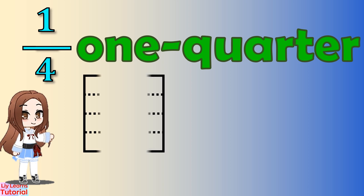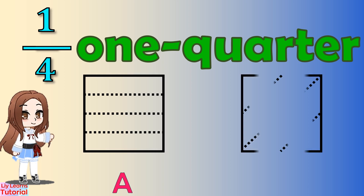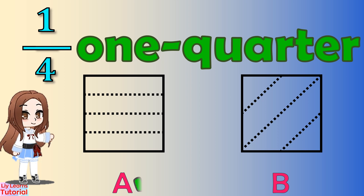Which of these shapes has been cut exactly in quarters? If you answered shape A, you got the correct answer. Let's show one quarter by coloring it.